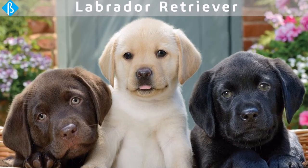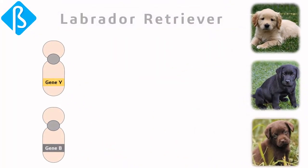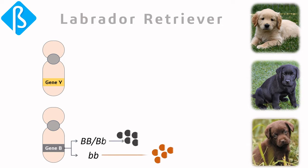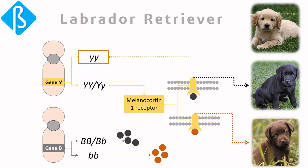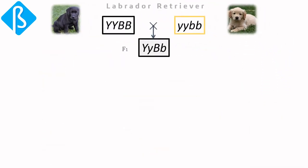Let's understand this by an example of coat colors in Labrador dogs. There are three different coat colors seen in them: yellow, brown, and black. Two genes, Y and B, present on different loci affect the coat color. The dominant allele for the B gene produces a ligand for black color, and the recessive one produces a ligand for brown color. These ligands interact with the melanocortin-1 receptor to give the respective coat color, which is produced by the dominant allele of the Y gene.